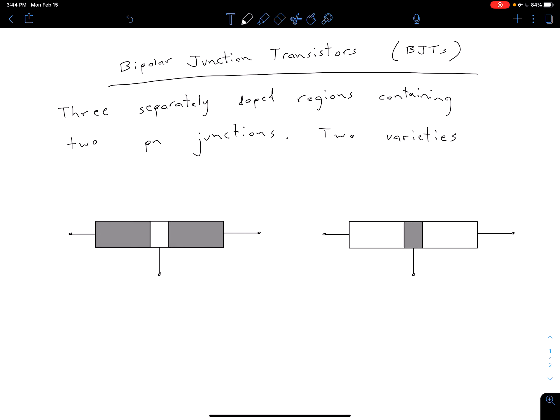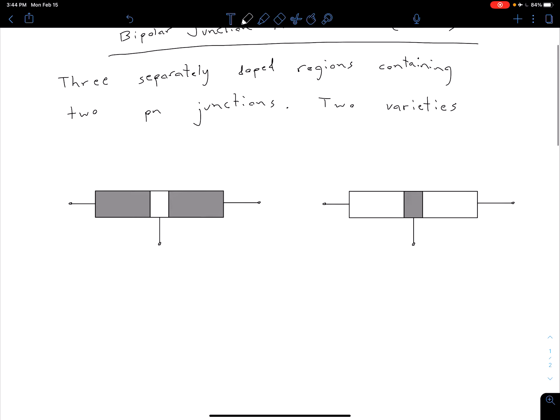So in this video let's get back to our basic overview. Our bipolar junction transistors consist of three separately doped regions containing two PN junctions. We have two varieties and you can see I've got two partially filled in sketches here below.